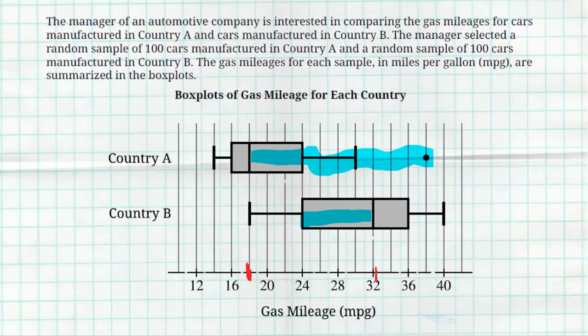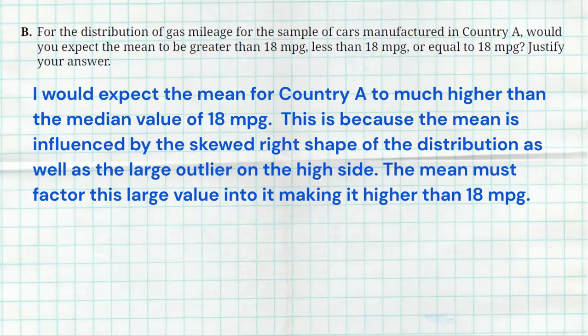Well, due to the fact that Country A is very skewed to the right, the mean is going to be higher. Now, here's my explanation for that. I would expect the mean for Country A to be higher than 18 miles per gallon. This is because the mean is influenced by the skewed right shape of the distribution, as well as the large outlier on the high side. The mean must factor all those values into account, and that's going to make the mean be higher than 18, because every single value matters, and that one really, really high value, and even those high values to the right, that upper 50% that's more spread out, is going to drag the mean to the right, meaning it's definitely going to be higher.